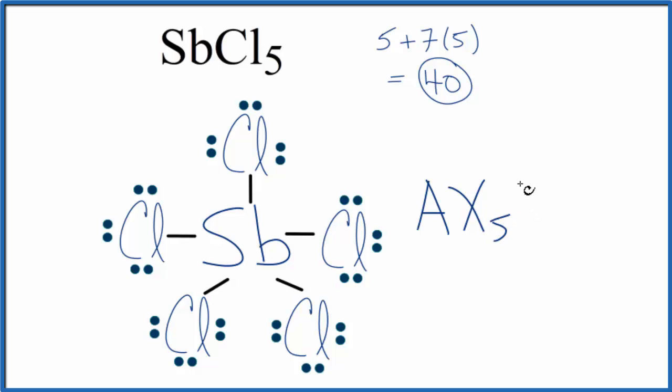And then E, that would be the number of lone pairs. There aren't any. So you could look AX5 up on a chart, and you would see that that is trigonal bipyramidal, just like we saw before.